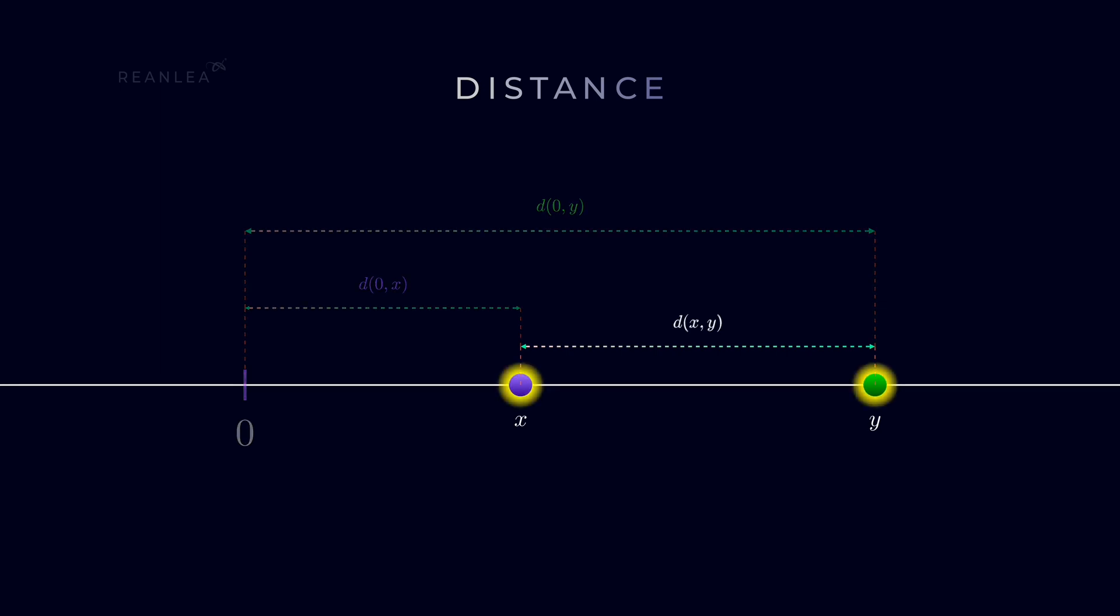Yet, the distance between x and y and the distance between the origin and x together gives us the distance between the origin and y. And that's how we get the relation as d of 0x plus d of xy is equal to d of 0y, which further implies that d of xy is equal to d of 0y minus d of 0x. From where we can deduce the result that d of xy is equal to y minus x.